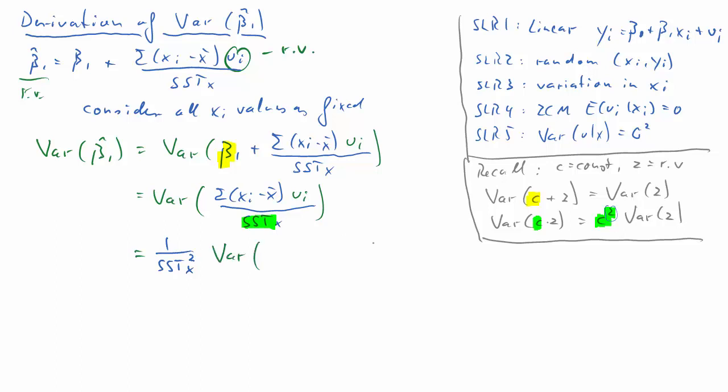That's the ui, our random variable, and this term sum of xi minus x bar. So we have sum of xi minus x bar times ui. And just to make it notationally easier we will now call this xi minus x bar di. The distance of xi from its average x bar. It's just a notational thing. It gets less messy.